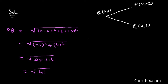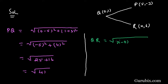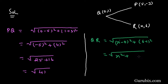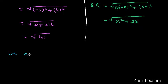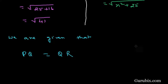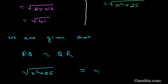Now we shall find the distance between points Q and R using the distance formula: QR = √[(x - 0)² + (6 - 1)²], which means √[x² + 5²], which means √[x² + 25]. We are given that PQ equals QR, so √[x² + 25] = √41.